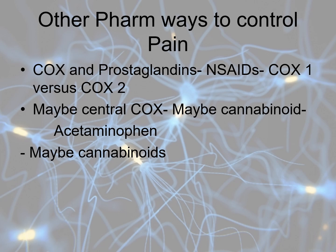COX-1 receptors are found diffusely throughout the body. COX-2 receptors are found most places except the stomach. A concern with NSAIDs was that they caused GI bleeds by blocking the mechanism that protects the stomach, allowing acid to erode through. COX-2 inhibitors like Celebrex do not cause that problem to anywhere near the same extent. The non-selective COX-1 inhibitors such as ibuprofen and naproxen are effective for pain but carry a slightly increased incidence of cardiovascular issues — potentially more substantial than commonly recognized.